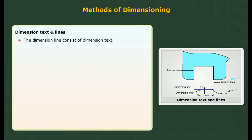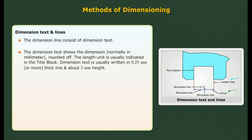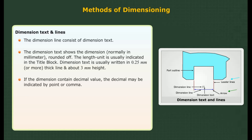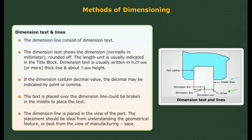Dimension text and lines: The dimension line consists of dimension text showing the dimension normally in millimeters, rounded off. The length unit is usually indicated in the title block. Dimension text is written in 0.25 mm or more thick line and about 3 mm height. The text is placed over the dimension line, or the baseline could be broken in the middle to place the text. The dimension line is placed in the view of the part after consideration — ideally for understanding the geometrical feature, ease of manufacturing, or functional significance. The dimension line is of the same length as the dimension of the geometrical feature shown in the view.